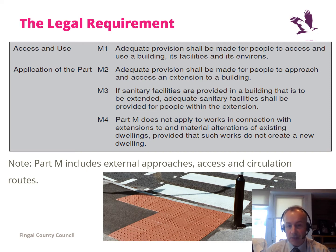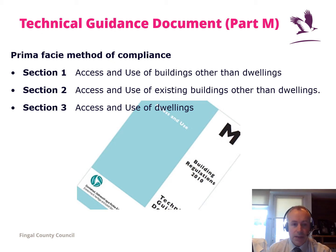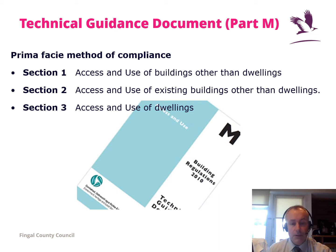Here we have a picture of some tactile paving and a pedestrian crossing to allow people to get to the building. Technical guidance Part M is broken up into three sections: the first is access and use of buildings other than dwellings — essentially new buildings; the second is access and use of existing buildings other than dwellings; and the third is access and use of dwellings. Using the technical guidance is prima facie evidence of compliance with the building regulations, but there are other technical documents which can be used as well.